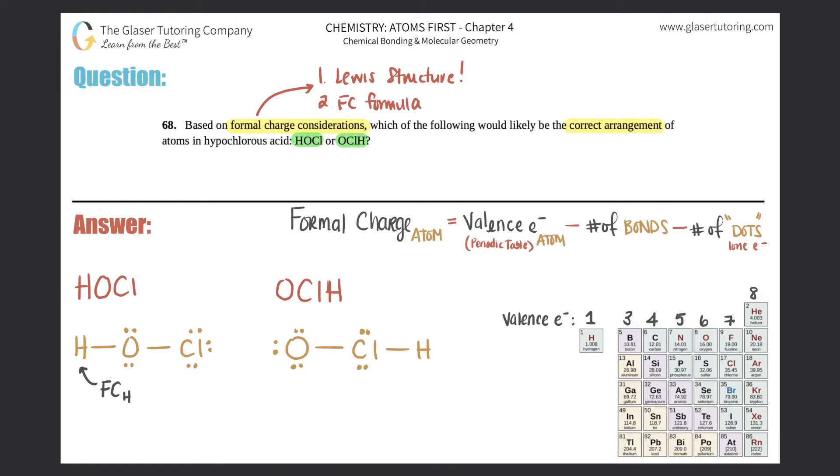Formal charge of hydrogen: you always start with your valence electrons from the atom on the periodic table, so hydrogen has one valence electron. That's one minus number of bonds—this hydrogen has one bond, so minus one—minus number of dots or lone electrons around the hydrogen. Looking at the hydrogen, there are no lone dots, so it's zero. One minus one minus zero is zero, so this hydrogen is neutral. It's perfect.